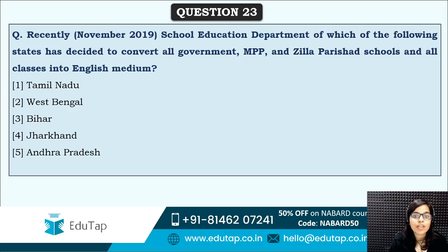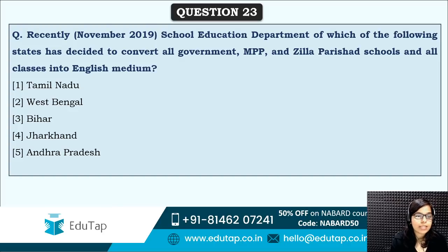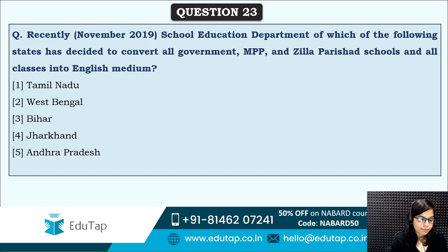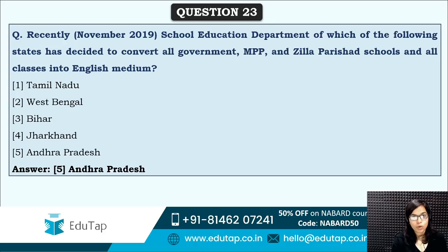Next: the school education department of which of the following states has decided to convert all government MPP and Zilla Parishad schools and all classes into English medium? Which state has taken this decision? The correct answer is option five — Andhra Pradesh. The Andhra Pradesh state government has decided to convert all government and Zilla Parishad schools into English medium schools.